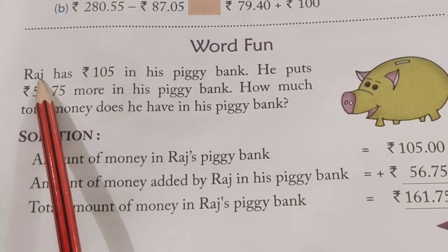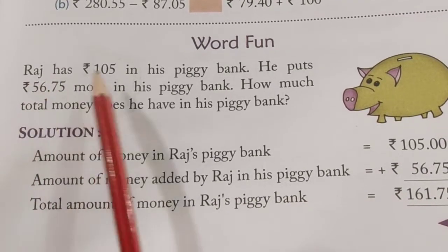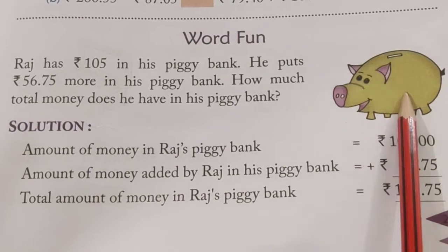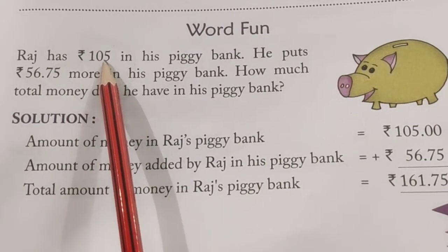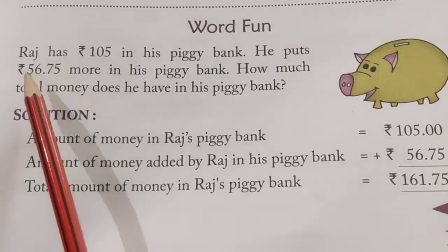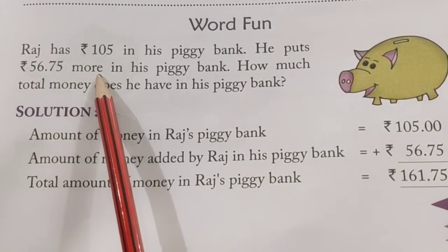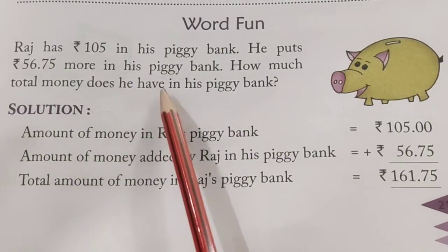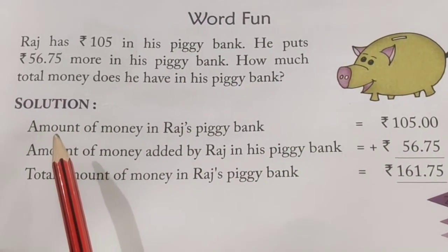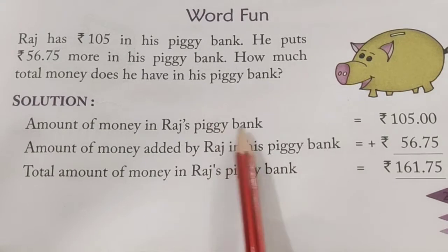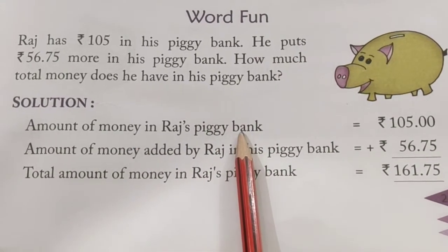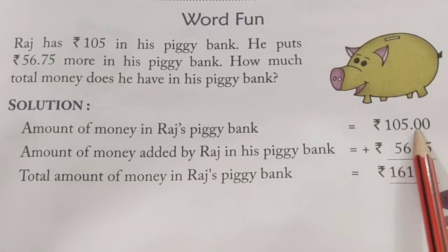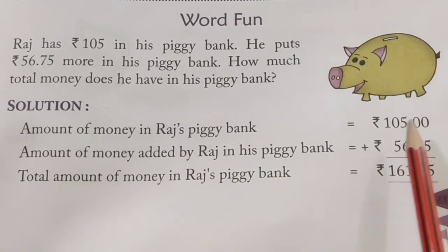Read the statement with me. Raj has rupees 105 in his piggy bank. He has 105 rupees. He puts rupees 56.75 more in his piggy bank. How much total money does he have in his piggy bank? So, first of all, the amount of money in Raj's piggy bank — Raj's piggy bank already has rupees 105. We will write it here. Now look here, there was 105 rupees, so he has got a dot.